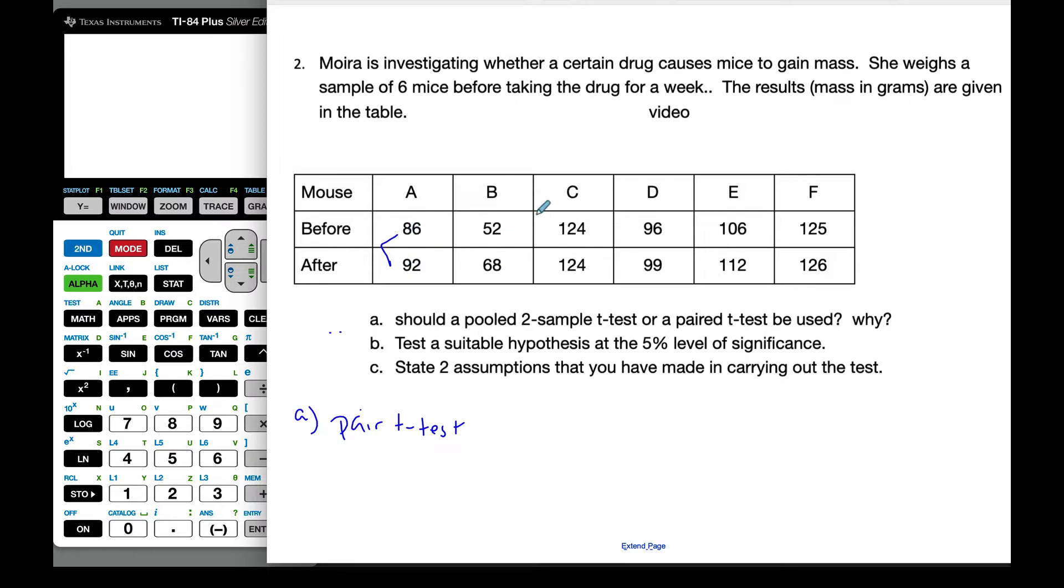And so by pairing them up, it greatly reduces our variability, and so we're able to get a better result for our test. And that is why we should use a paired t-test, because we can match the data up. And so part B then,